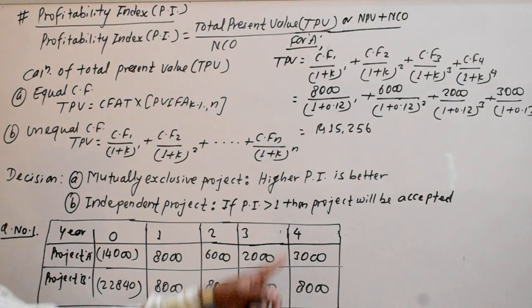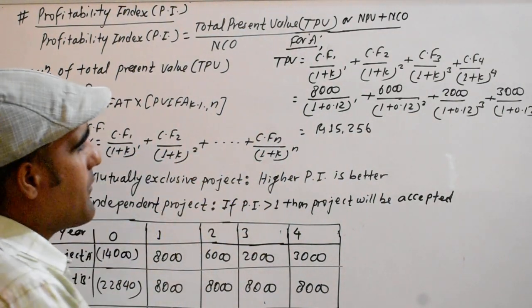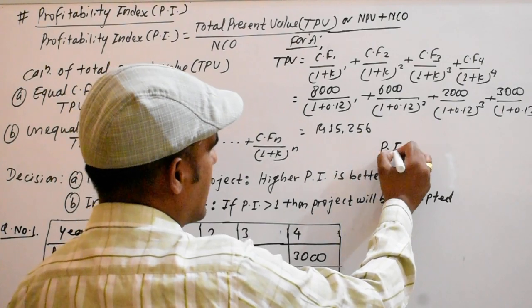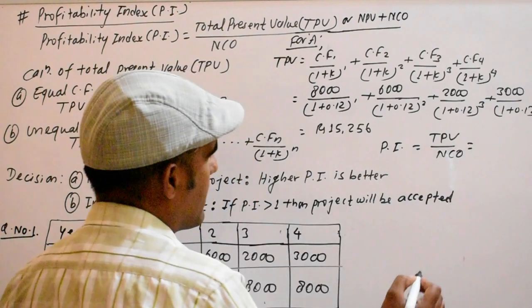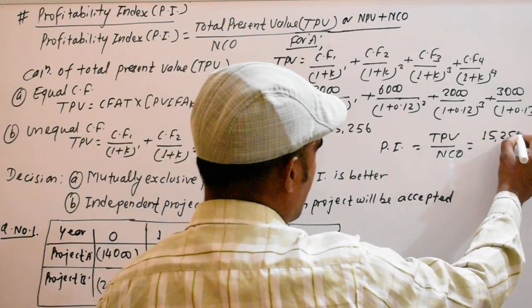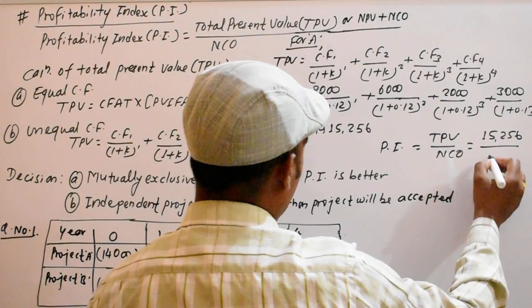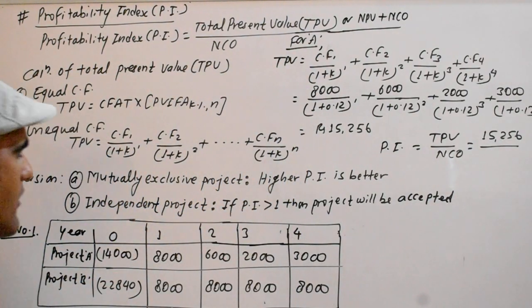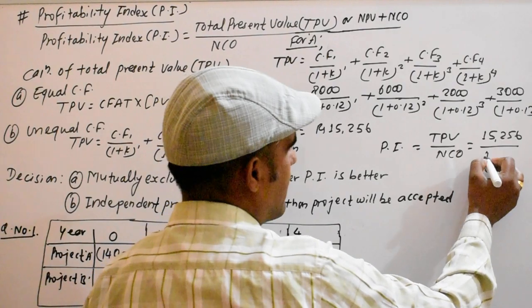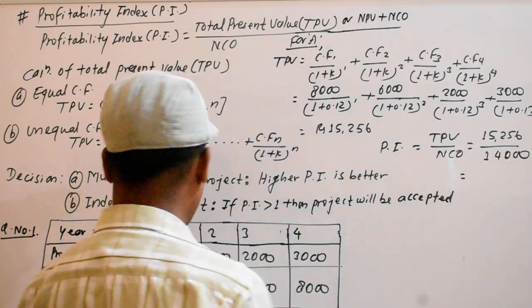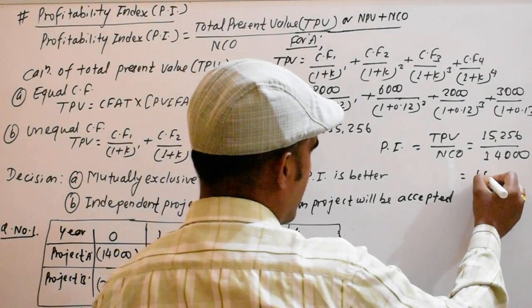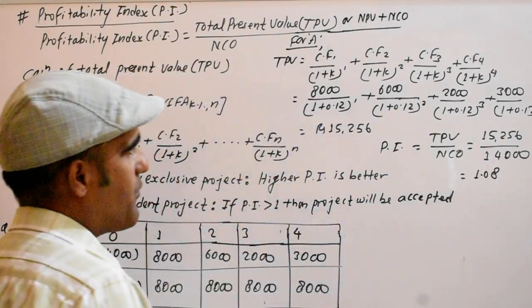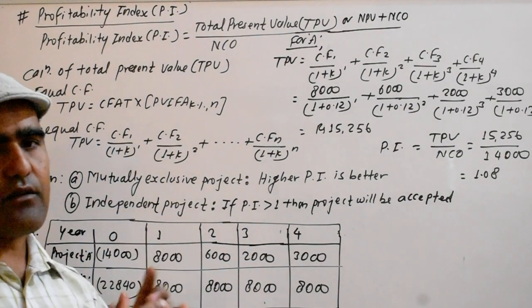For Project A, with a 12% discount rate and investment of 14,000, the Profitability Index is approximately 1.0 or just above one point zero.